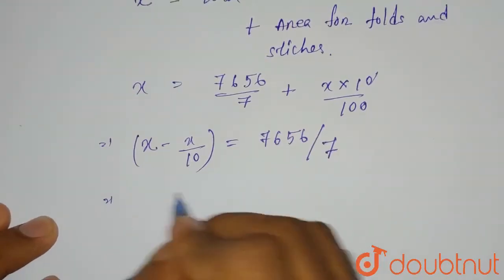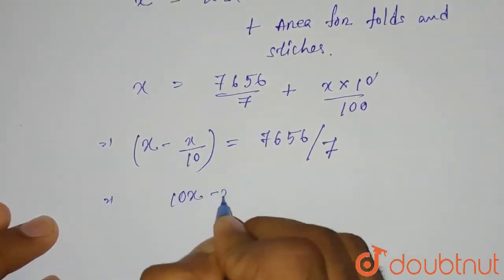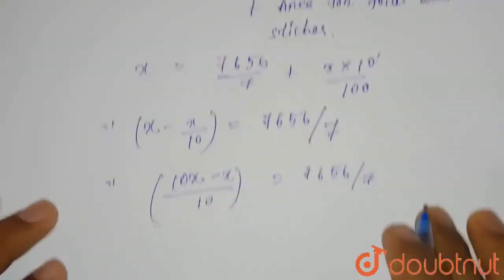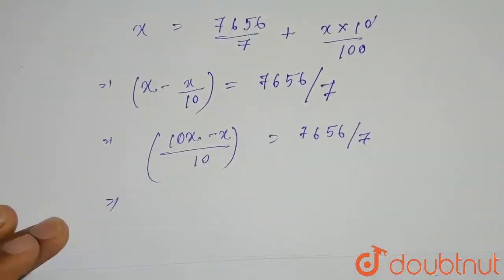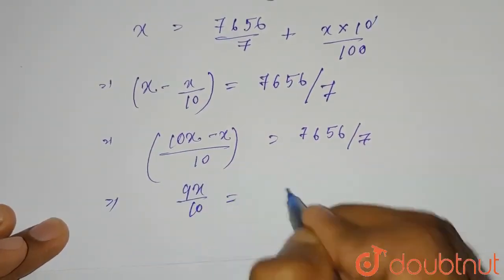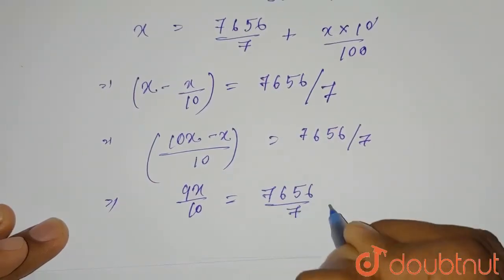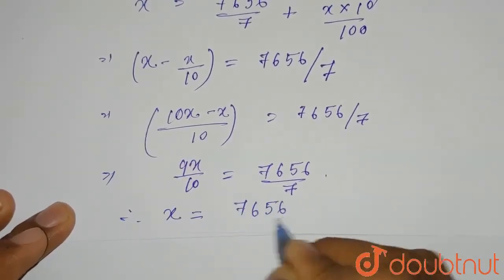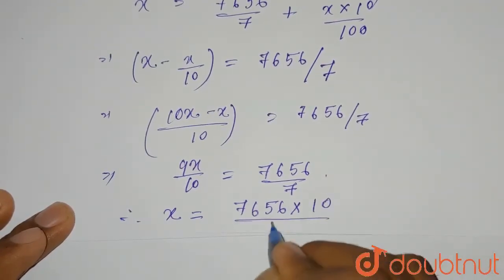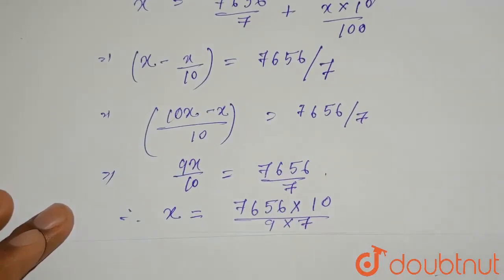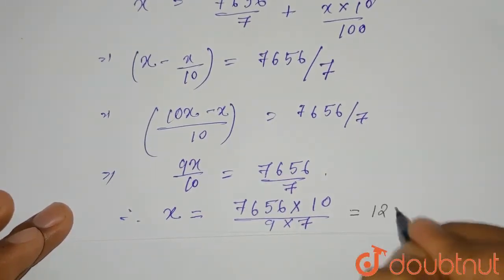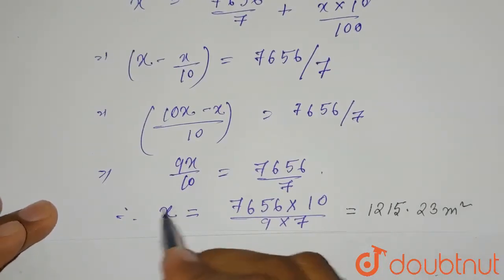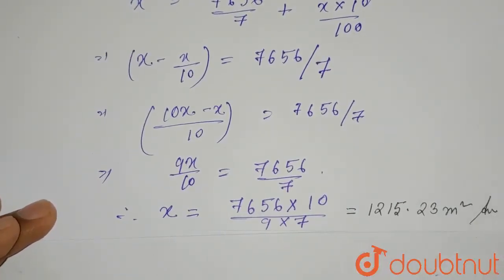Taking the LCM, we get 9X divided by 10 equals 7656 divided by 7. Therefore, X equals 7656 multiplied by 10 divided by (9 × 7). Solving this gives X equals approximately 1215.23 meters squared. This is the total area of the canvas — which is the required solution for this question.